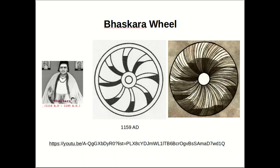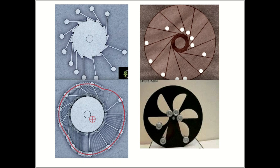Baskara's idea was later adopted and generalized by other inventors, who came up with many different kinds of designs. Some of them use a rolling ball — as the wheel rotates, the balls roll from the center to the boundary, making one side of the wheel heavier than the other.